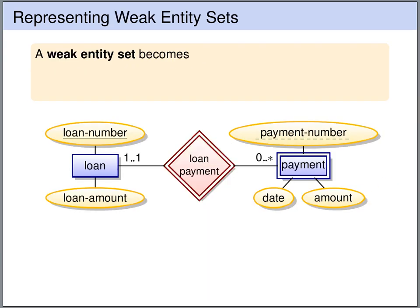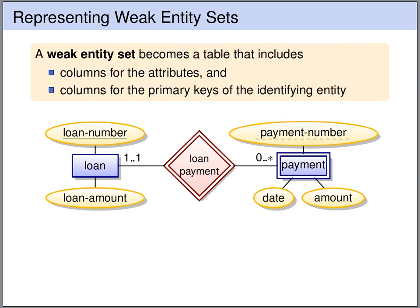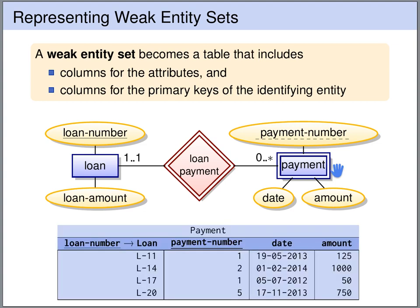A weak entity set is translated into a table that has columns for each of the attributes, plus columns for the primary key of the identifying entity set. Here we have a weak entity payment, so we translate this into a table payment.